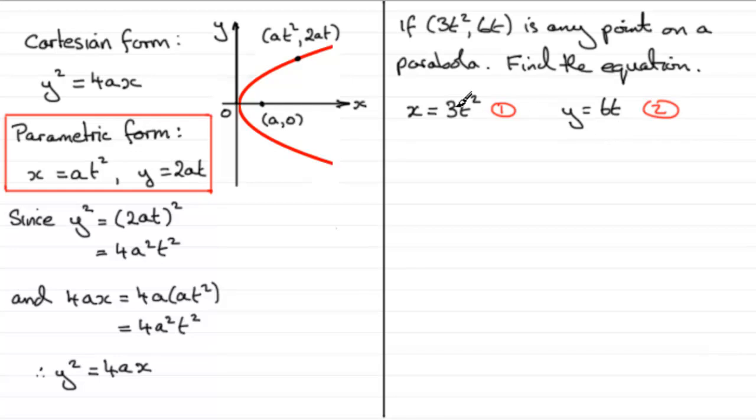I would label these two equations 1 and 2. When we're trying to find the Cartesian equation from parametric equations, we try to make t the subject. Equation 2 here is the easier one to work with, so from equation 2, if I make t the subject, then t is going to equal y divided by 6. Now I can substitute that into equation 1.